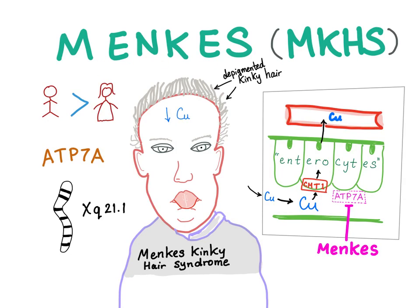Menke's disease, or Menke's kinky hair syndrome, is characterized by depigmented kinky hair — very high yield. It occurs in males more than females because it's an X-linked disease on the X chromosome.